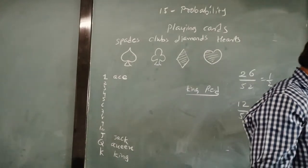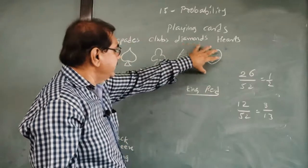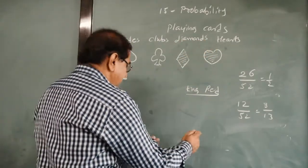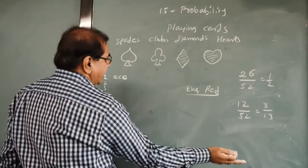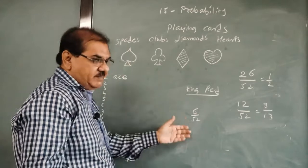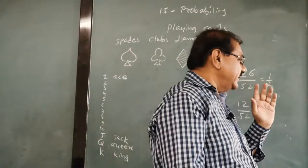We go for third, a red face card. Red means again we have to come to diamond and hearts only. So out of the 12, 6 are gone, 6 are left. So it is 6 upon 52. You can simplify it to make the rational number, but this is how you can find out the probability.